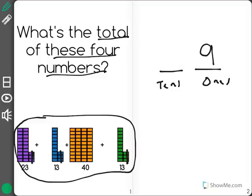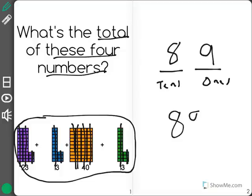Now that I'm done adding the ones, I'm going to add the tens. I have one group of ten, two groups of ten, three, four, five, six, seven, eight groups of ten for my grand total of 89.